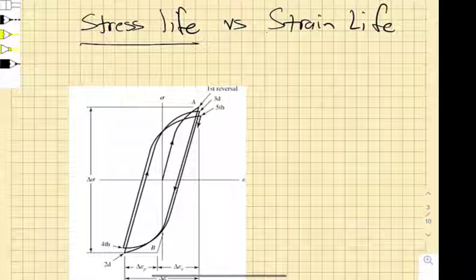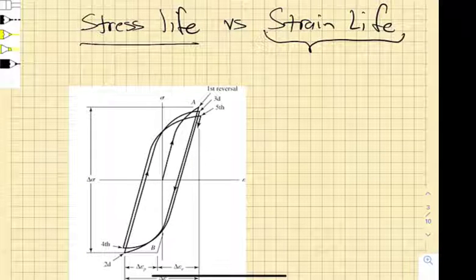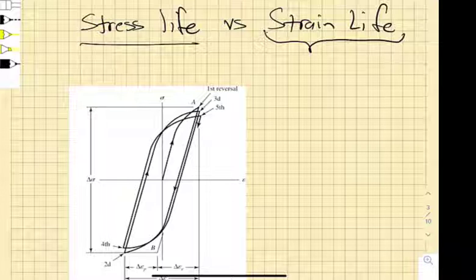This is the stress life approach, which is the easiest thing to do, but most people who do fatigue research say the thing that really matters is the strain magnitude, because it is localized plastic deformation that shuttles dislocations around and eventually leads to the formation of an initial crack, which then will propagate according to fracture mechanics.